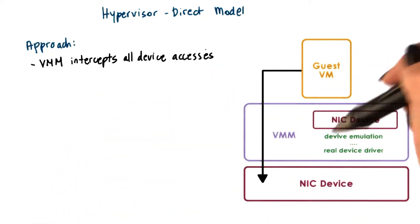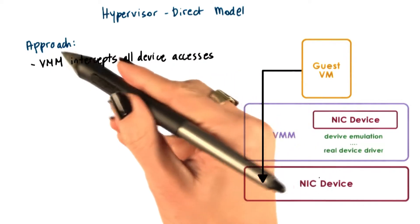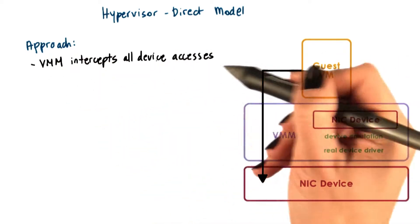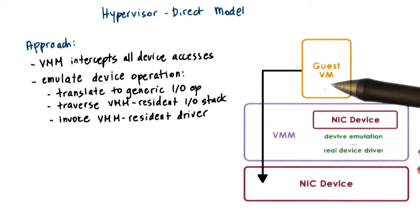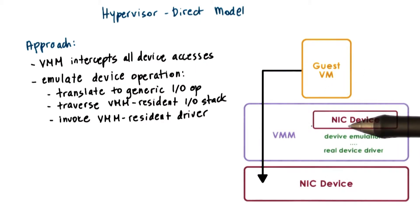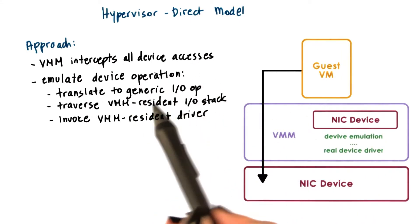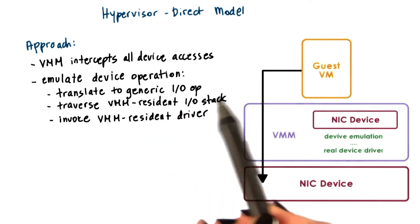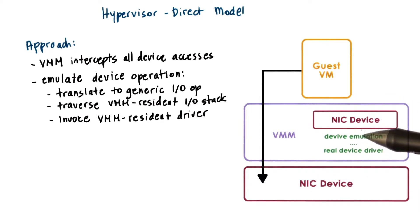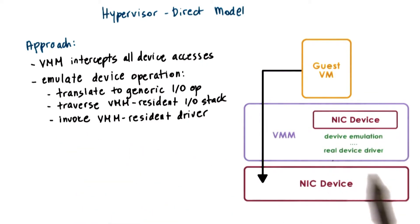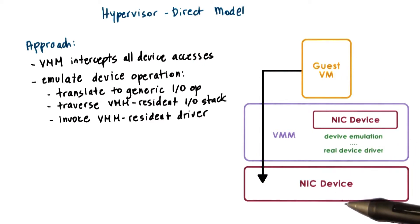The second model for providing virtualization of physical devices is to allow the hypervisor to intercept every single possible device access performed by a guest VM. While the hypervisor has information about the device operation the guest VM wanted to perform, it doesn't require that the guest VM's device and the physical device match. The hypervisor translates that device access to a generic representation of an IO operation for that particular family of devices — whether network or disk devices — and then traverses the VMM-resident IO stack, whose bottom layer is the actual real device driver. The hypervisor invokes that device driver and performs the IO operation on behalf of the guest VM.